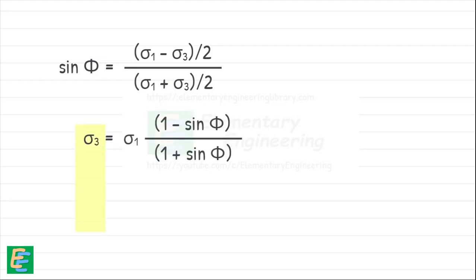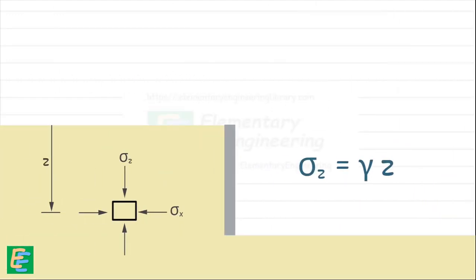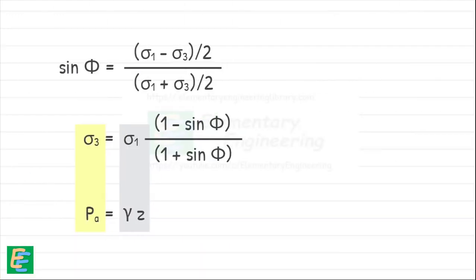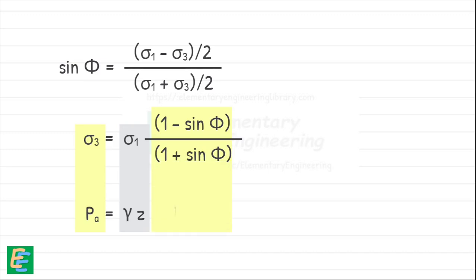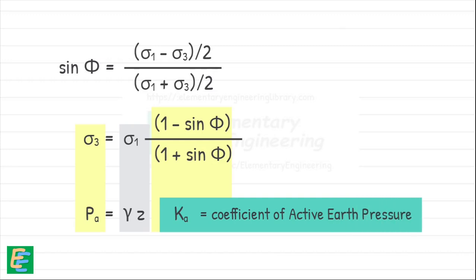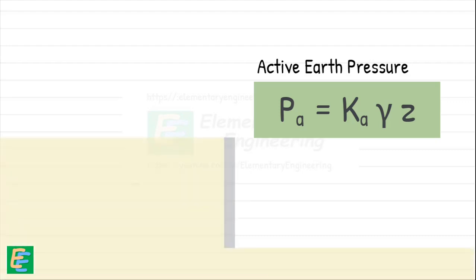Here, sigma 3 represents the active lateral pressure at failure, which is denoted as Pa. And sigma 1 is just the vertical stress, which we already defined as gamma z. This term is commonly written as Ka, which is called the coefficient of active earth pressure. So, putting it all together, we get the expression for calculating the lateral earth pressure on soil in active condition.